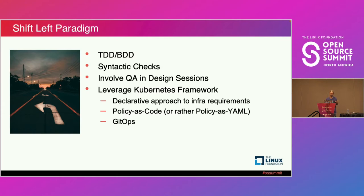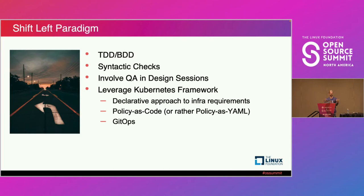Kubernetes can be seen as a platform where you can represent your infrastructure requirements as code — or as YAML. You can use GitOps to increase security and have better control, with Git as your single source of truth. The idea is to use CSI drivers in the context of stateful workloads, which persist data to disk. What is important is that in case of a node failure, the data is not lost.